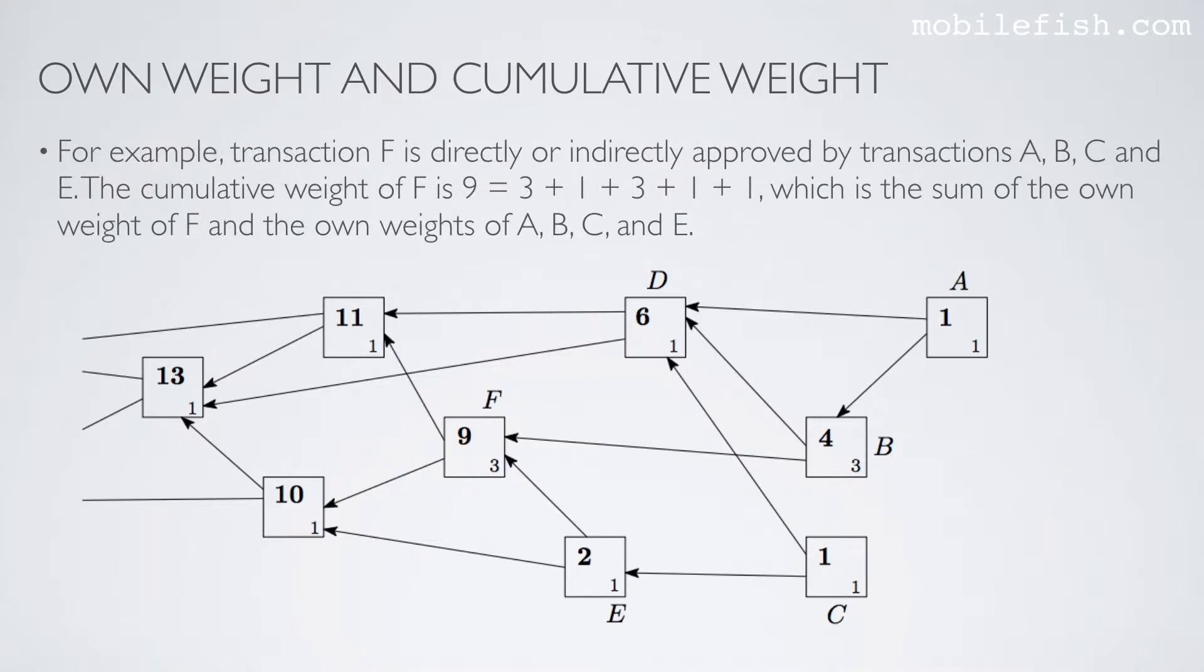For example, transaction F is directly or indirectly approved by transactions A, B, C, and E. If I look at transaction A, it indirectly approves transaction F. Transaction B directly approves transaction F. Transaction C indirectly approves transaction F, and transaction E directly approves transaction F.